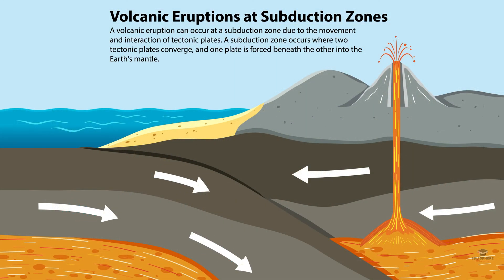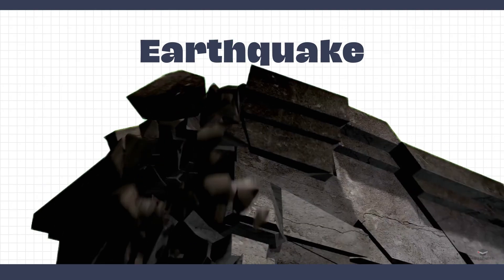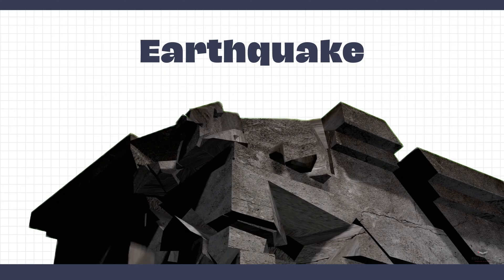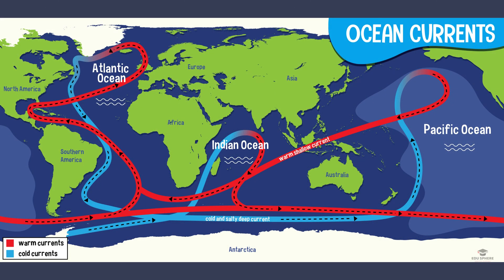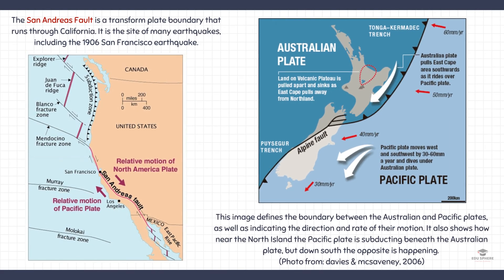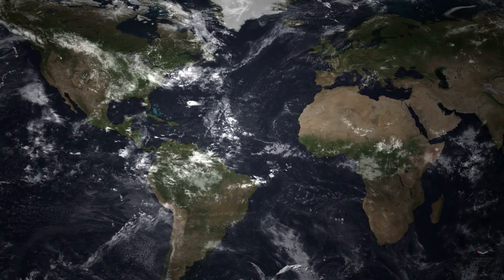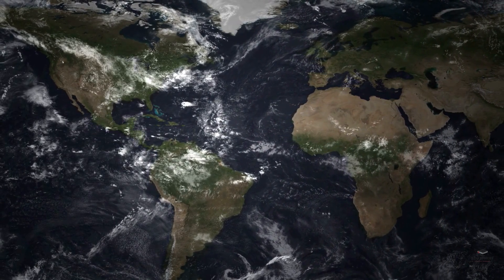Convergent plate boundaries are important because they are the sites of subduction, which is a major process in the formation of mountains and volcanoes. They are also the sites of earthquakes, which can be very destructive, and they play a role in the formation of ocean currents and climate patterns. Next is the transform plate boundary, a place where two tectonic plates are sliding past each other in opposite directions. This causes the crust to be sheared, and earthquakes can occur along the boundary. Here you can see some of the most well-known examples of transform plate boundaries. Plate tectonics is a complex and fascinating theory that has helped us understand the Earth's surface, and it is still evolving as we continue to learn more.